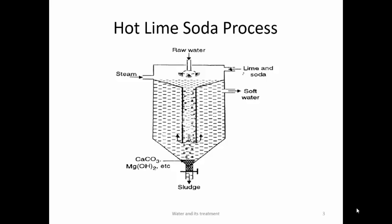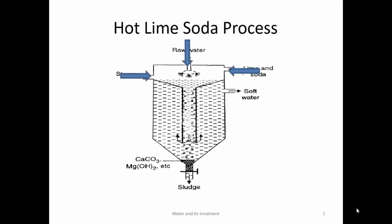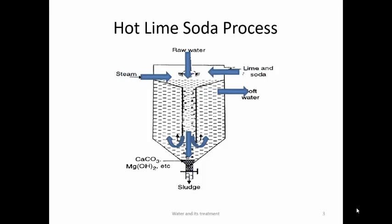All shortcomings of the cold lime-soda method are overcome in the hot lime-soda process. It consists of three parts: conical sedimentation tank, reaction chamber, and a wood fiber filter. Raw water is taken from one inlet, lime and soda from another, and high-pressure steam from a third inlet. The reaction is carried out at around 80–120°C. The sludge settles at the bottom and is removed; soft water rises and is removed via outlet. No coagulant is needed at high temperature, and the precipitate settles quickly. Residual hardness is 15–30 ppm.